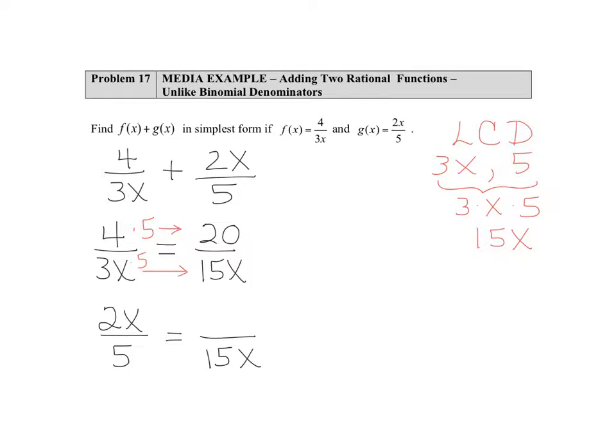So we run through the same analysis but we get different results. 5 in order to become 15x would be built up by both a 3 to get the 15 and an x. So again, what we do to the denominator we have to do the same thing to the numerator to maintain the balance.